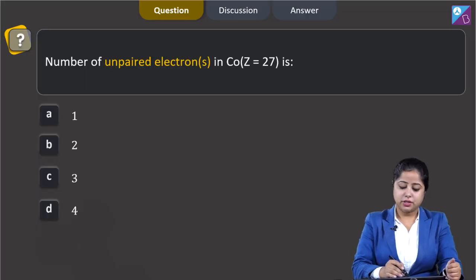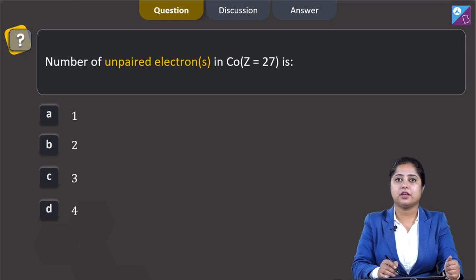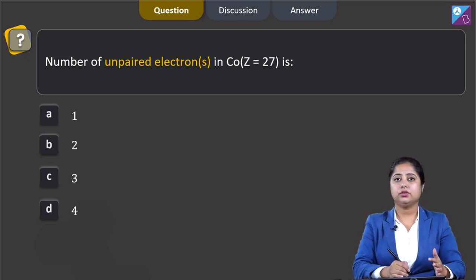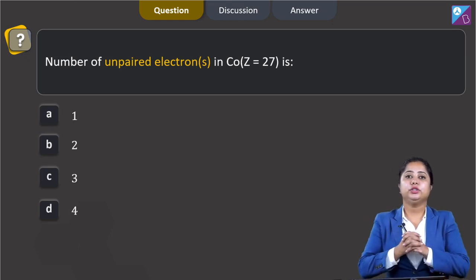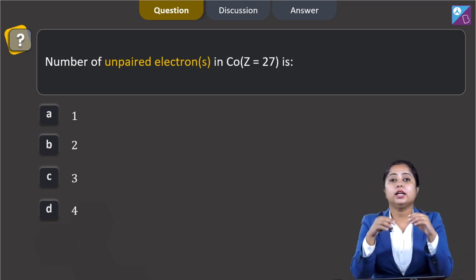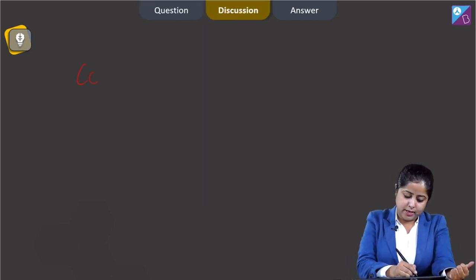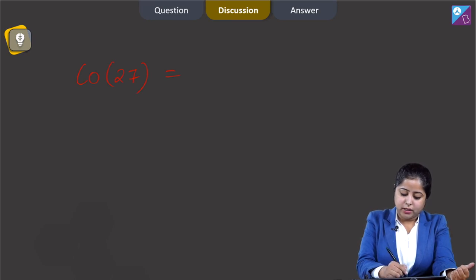The number of unpaired electrons in cobalt (Co, atomic number 27) — the options are 1, 2, 3, or 4. For this question we have to write the electronic configuration of cobalt. Cobalt atomic number 27: electronic configuration is [Ar] 4s² 3d⁷.